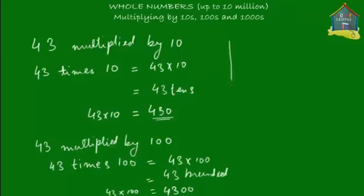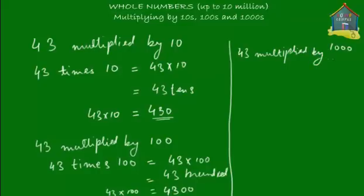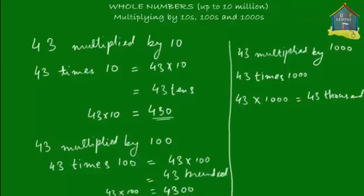Now let's try to multiply the same number 43 by 1000. So what you're trying to do is 43 multiplied by 1000. When you say 43 multiplied by 1000, that is equal to 43,000. Anything multiplied by 1000 will give you that many thousands. How you write 43,000 is 43 followed by three zeros.